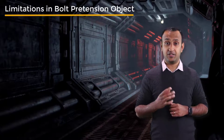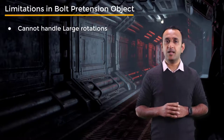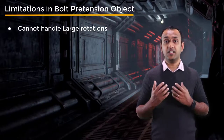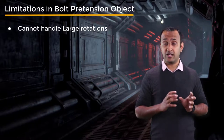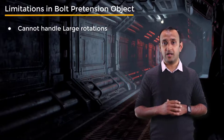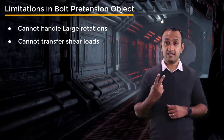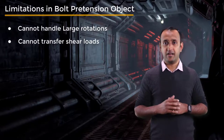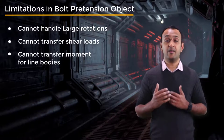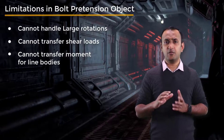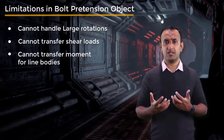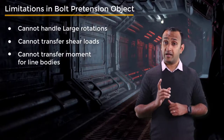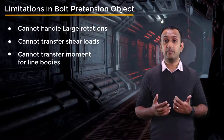The bolt pretension object is the most efficient way to define bolt pretension, but it has three limitations. First, it cannot handle large rotations, because the direction of bolt preload remains unchanged throughout the simulation — if the bolt undergoes large rotation, the preload direction does not rotate with it, giving inaccurate results. Second, the bolt pretension object cannot transfer shear loads and should be used with caution when modeling shear joints. Finally, the bolt pretension section cannot transfer moment when a line body is used to represent the bolt. If none of these limitations apply, bolt pretension object is the most efficient approach; otherwise, a translational joint should be used.